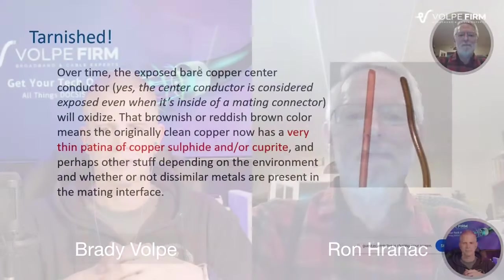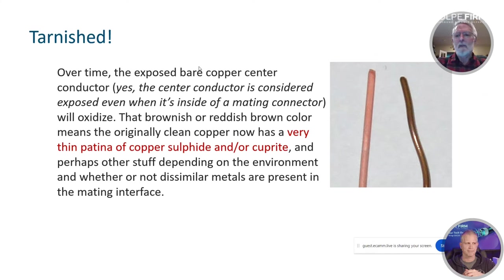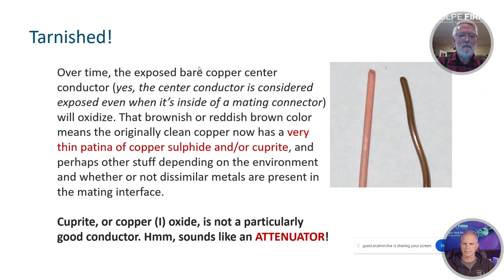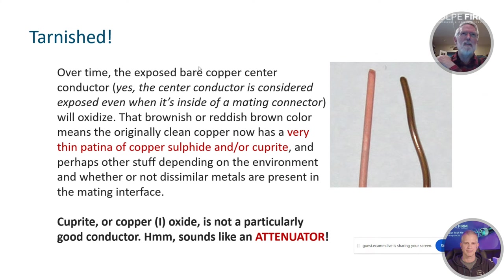So now we have this brownish or reddish-brown color on our center conductor. That means the originally nice shiny clean copper has this very thin microscopic patina of copper sulfide or cuprite or both, and perhaps other stuff depending on the environment. Remember, the cuprous oxide — Cu₂O, cuprite — is not a good conductor. And what does that sound like? An insulator? It could be an insulator, but I think you're going to find it actually behaves more like an attenuator. It'd have to be really, really bad to be an insulator. So we'll call it an unintentional attenuator.